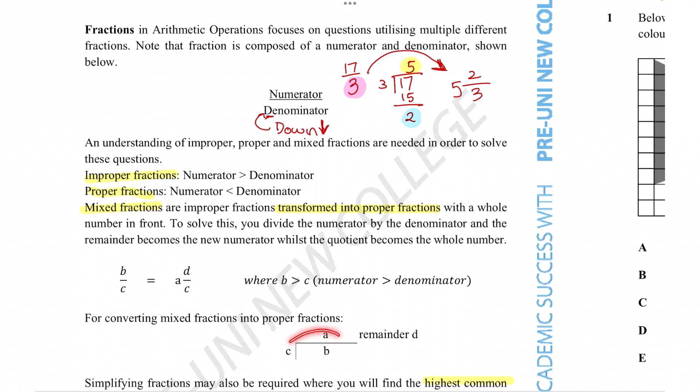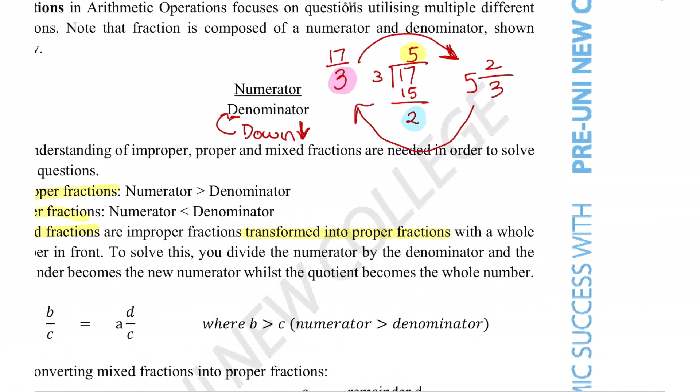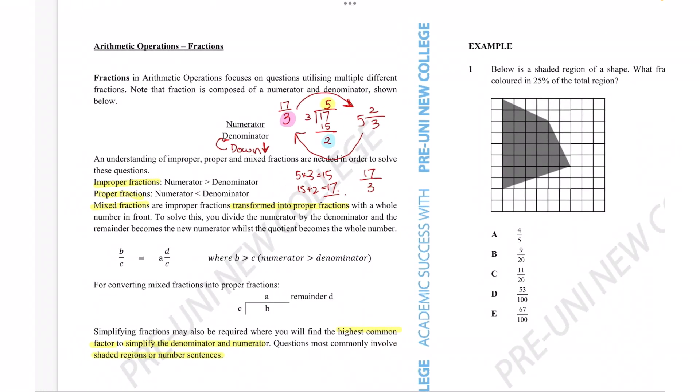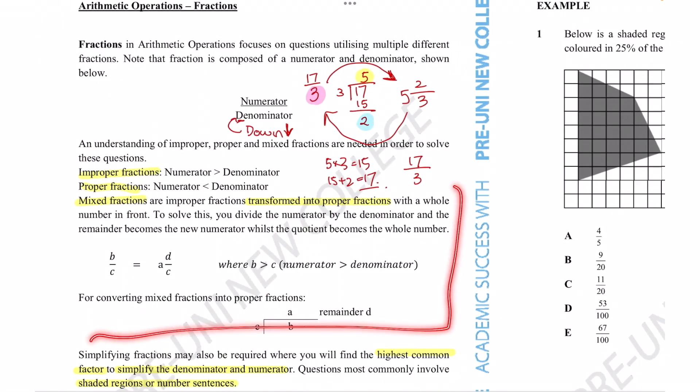And we can also convert the mixed fraction into an improper fraction if that is necessary by simply doing the reverse which is taking the whole number, multiplying it by the denominator and adding the top number and that gives us the numerator. So for example, 5 times 3 is 15, 15 plus 2 is equal to 17. So this becomes the numerator and the denominator stays the same. So we see we've got the numerator we started off with. So all that is being described in this bottom section here.